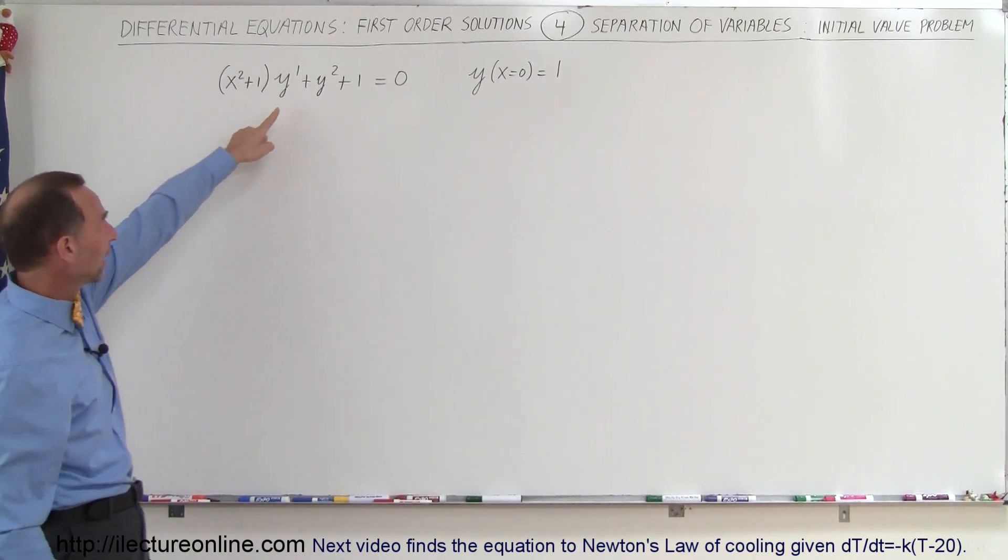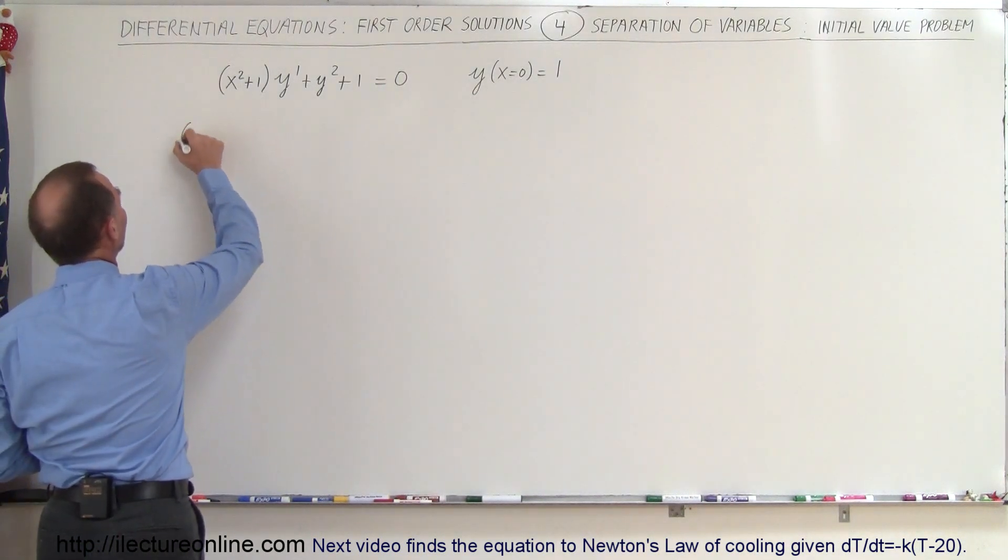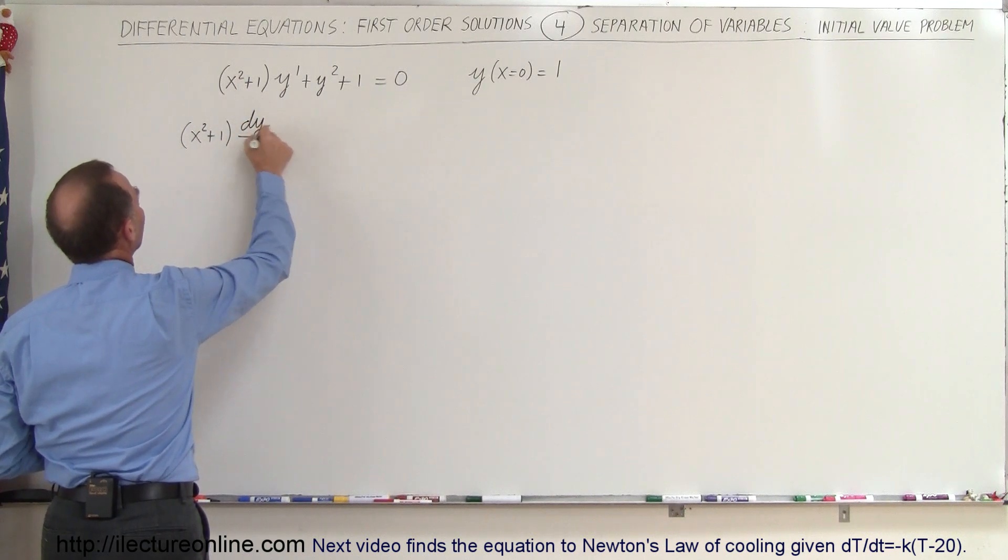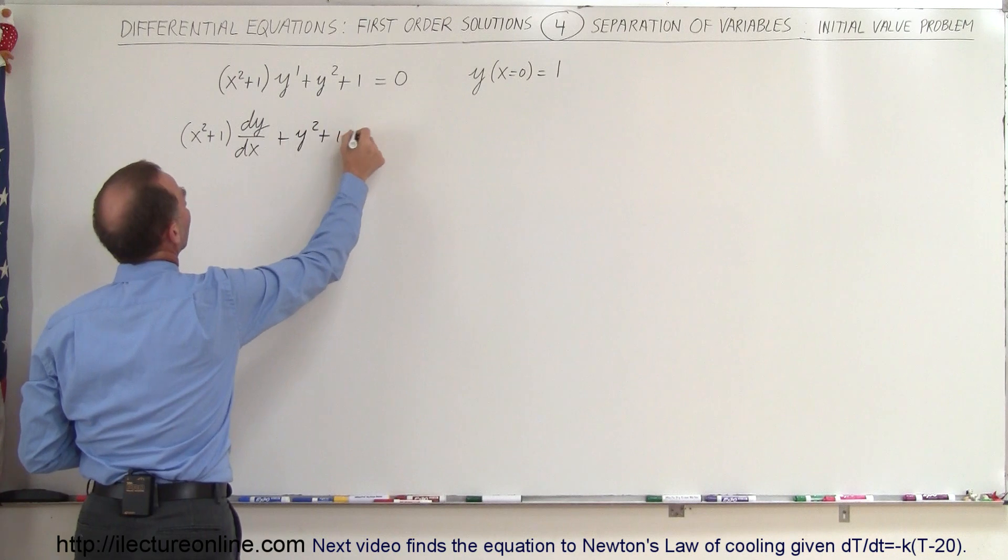Well first of all, let's rewrite this as y prime can be written as dy/dx, so that means we have (x² + 1) dy/dx + y² + 1 = 0.